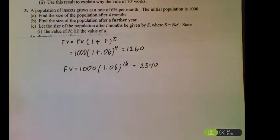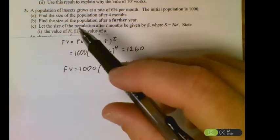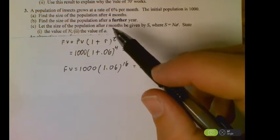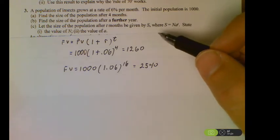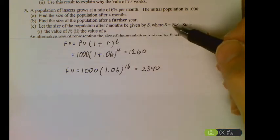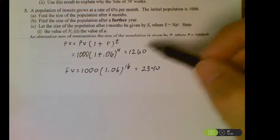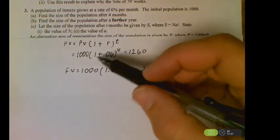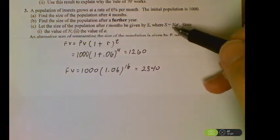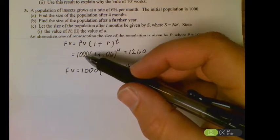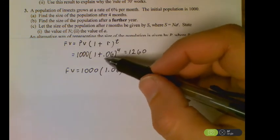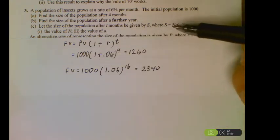Moving into Part C, it says they're giving us a general expression for what we've just been working with. The size after T months is given by a function they're calling S. They want us to identify what those values represent. If you look at what we've been using, the number sitting in front, the coefficient, has represented the initial population. So N is representing the 1,000, and A, the base of the exponent, has been our growth rate. In this case, our growth rate is the 1.06.